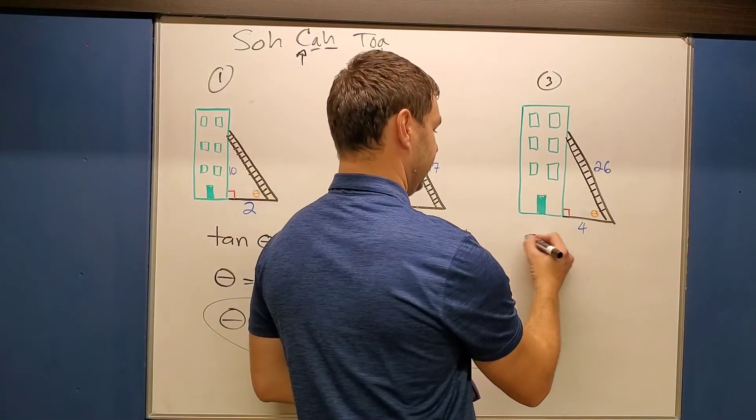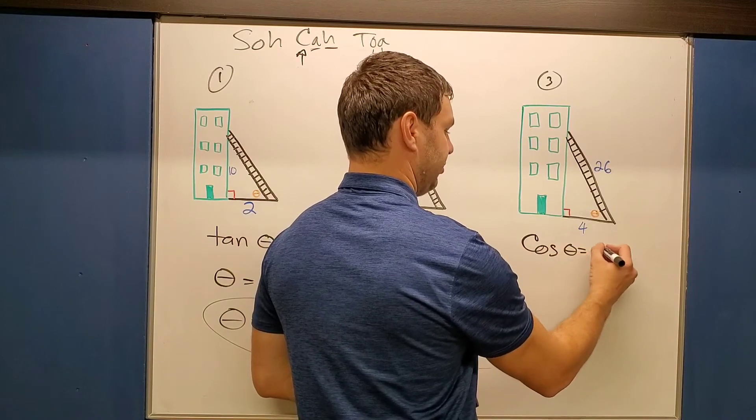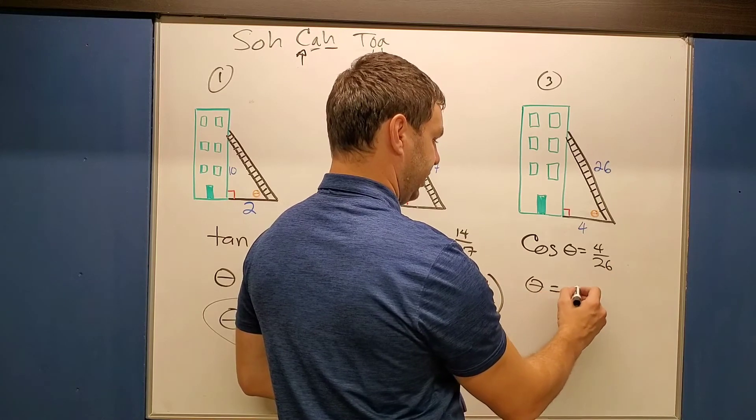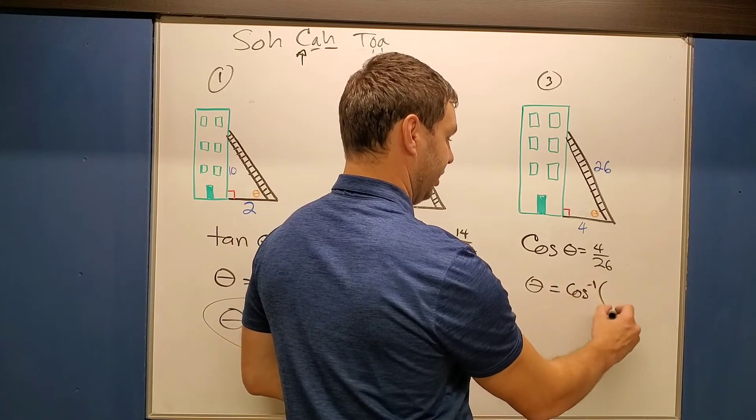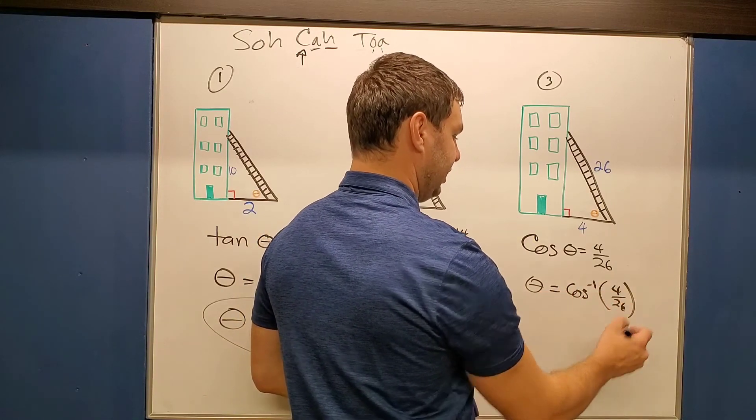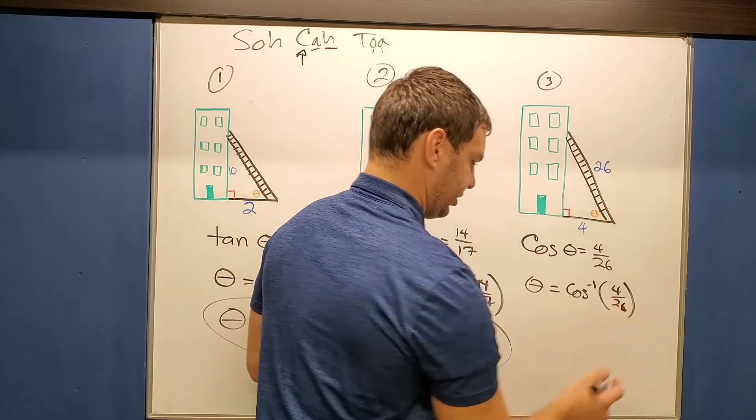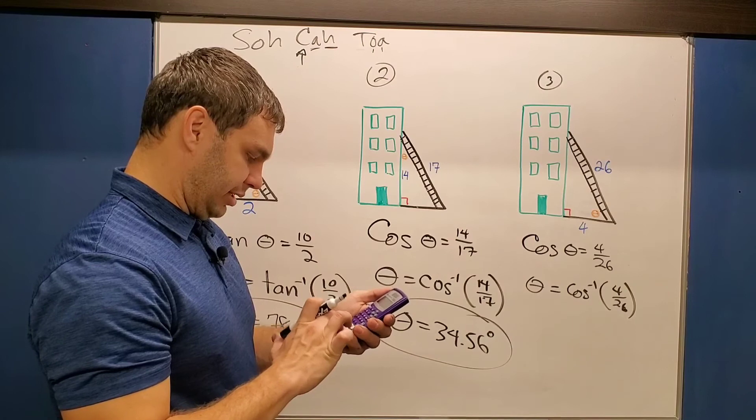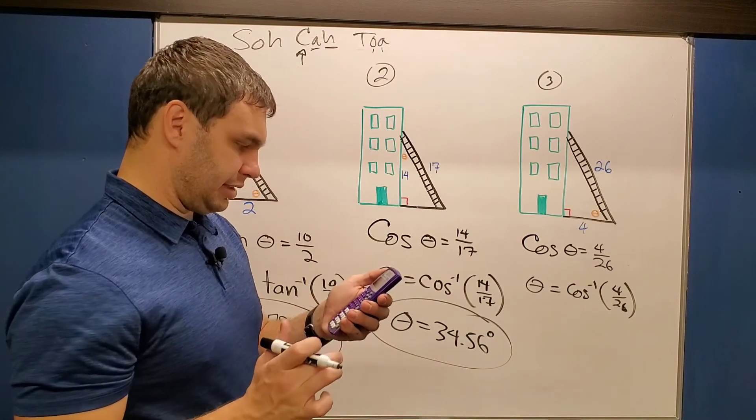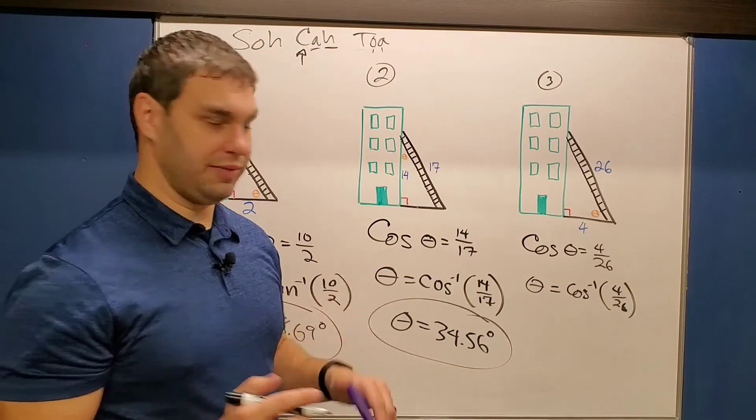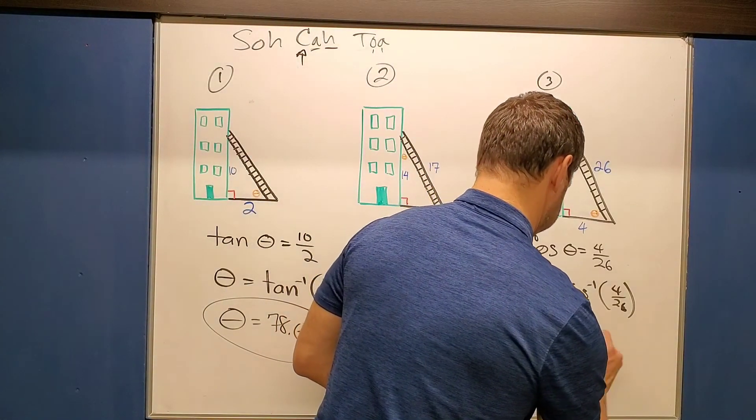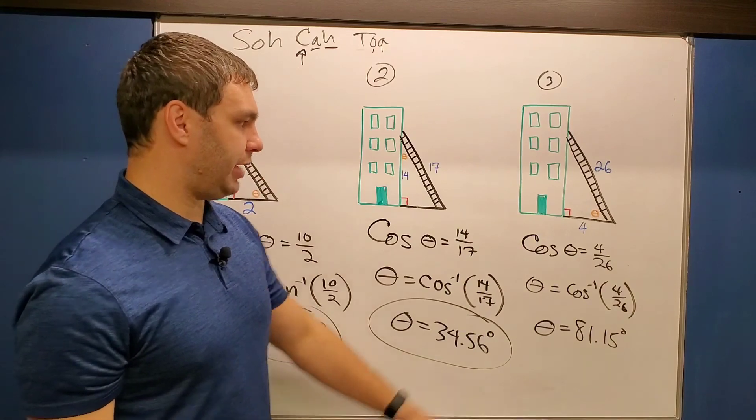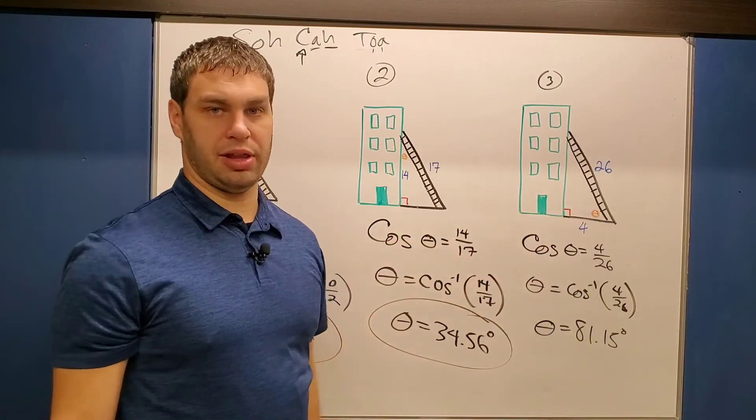So here we're going to say cosine of theta equals 4 over the hypotenuse 26, or just like the last one, theta equals the inverse cosine of 4 over 26. Type in the calculator exactly like it looks on yours. And that'd be 4 divided by 26. And this gives me 81.15 and again, that's in degrees, 81.15 degrees for angle theta right there.